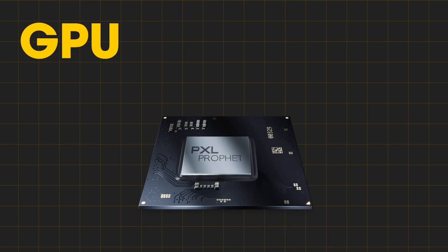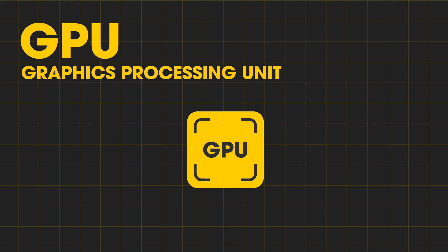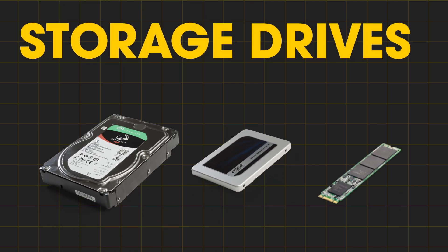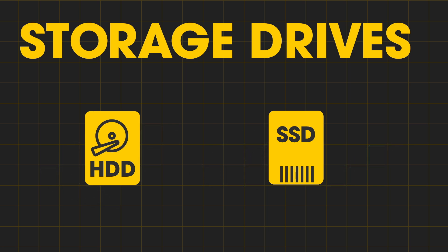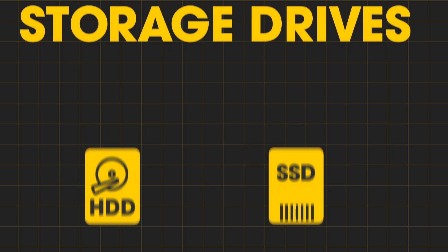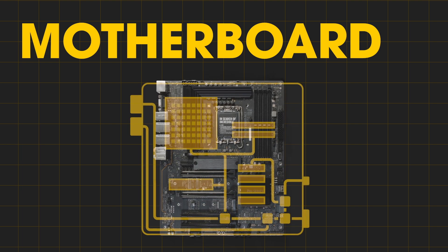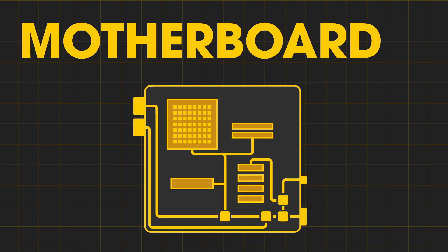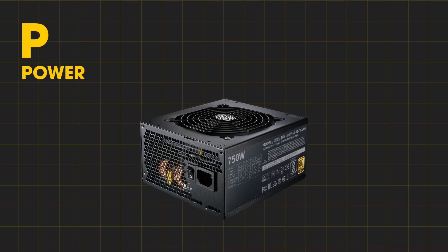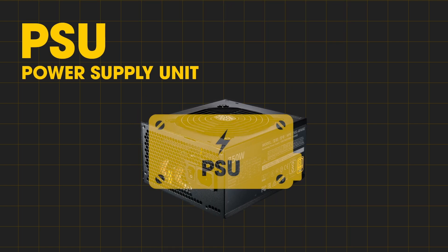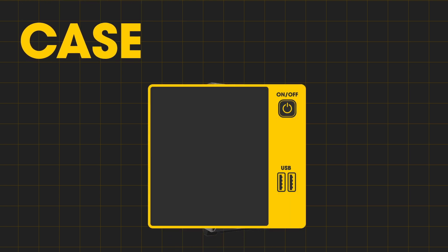A GPU, a graphics processing unit that puts pixels on the screen. Storage drives — hard drives or solid state drives — to store data and files. A motherboard, the hardware that connects all these components to each other and external devices such as keyboard and mouse. A power supply unit to provide electricity. And a case to put everything into.